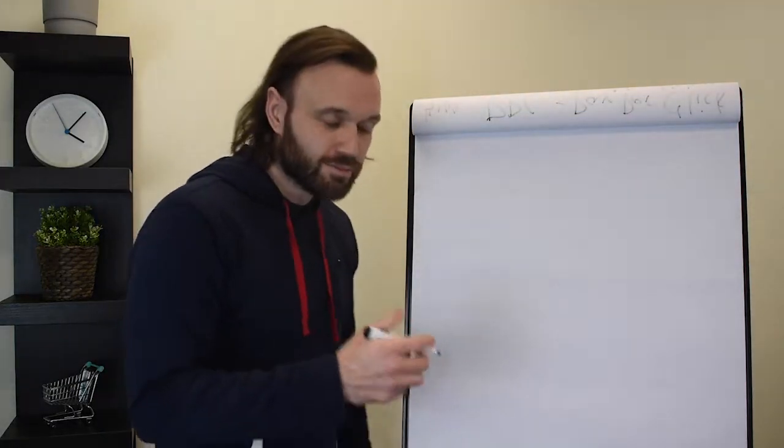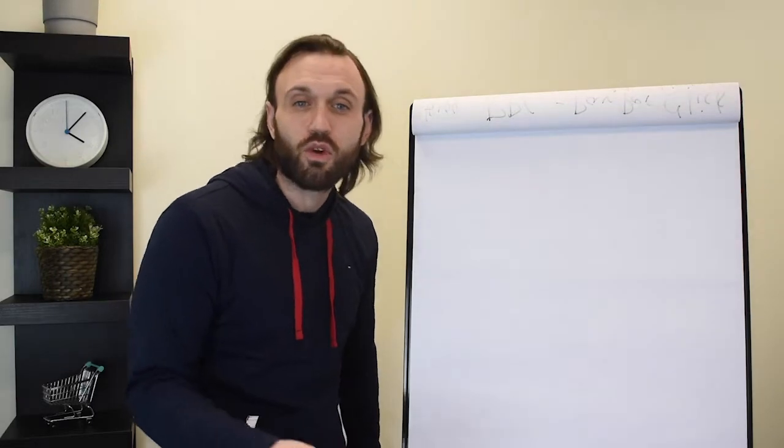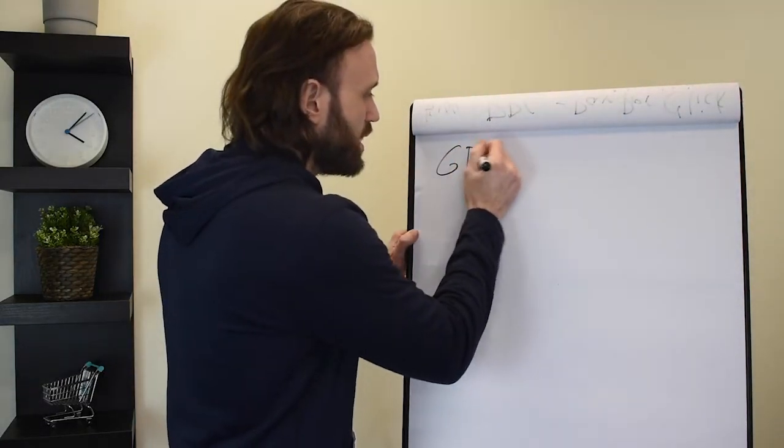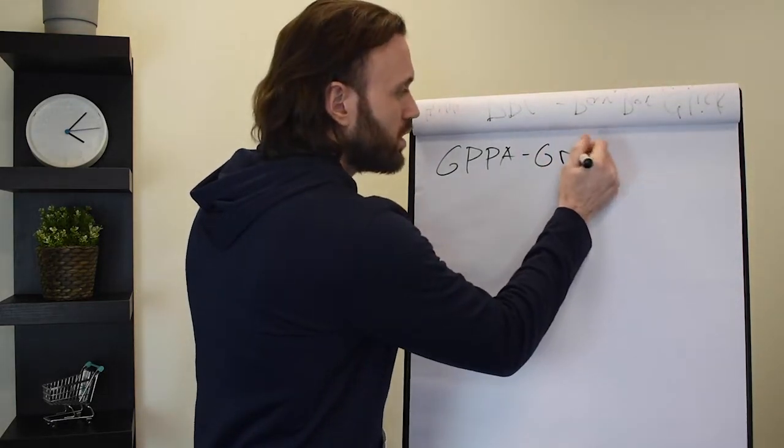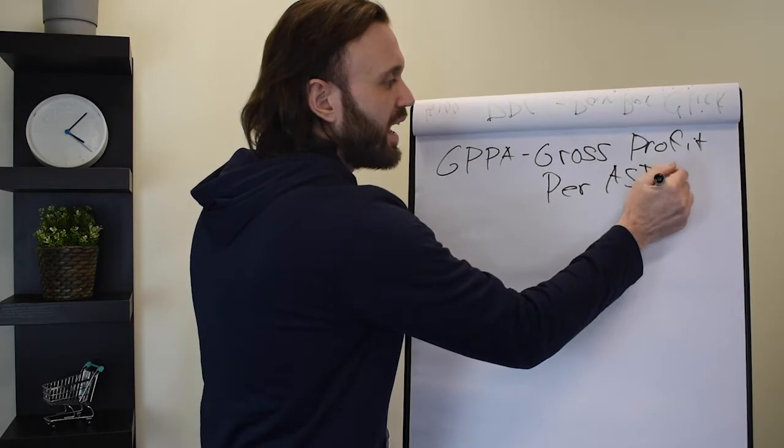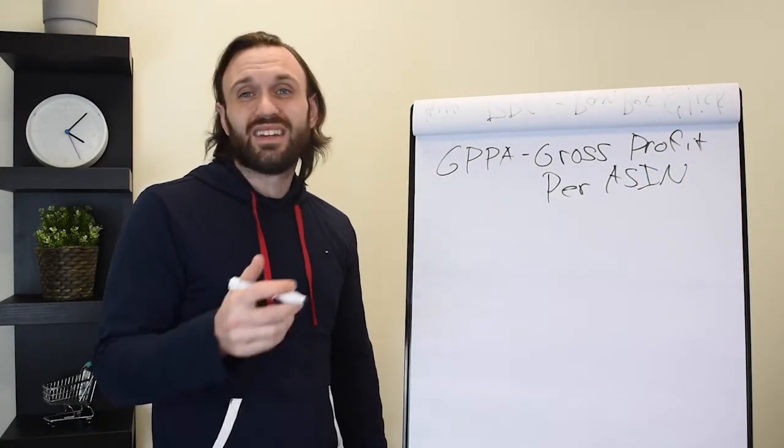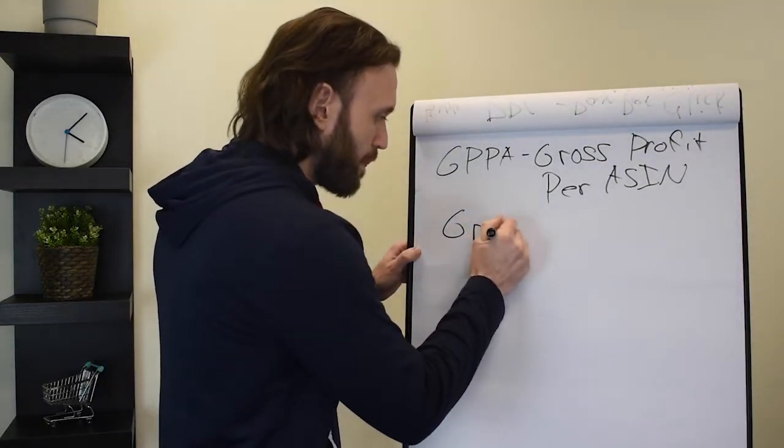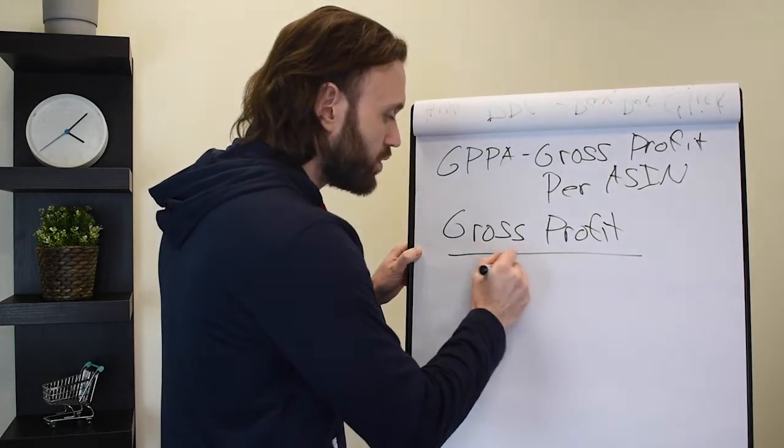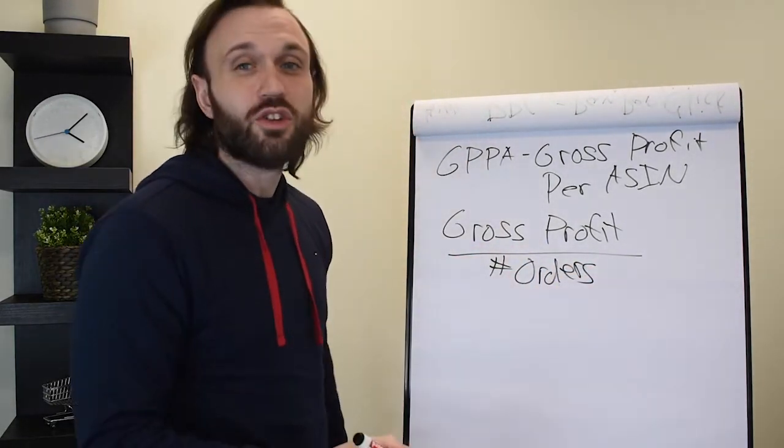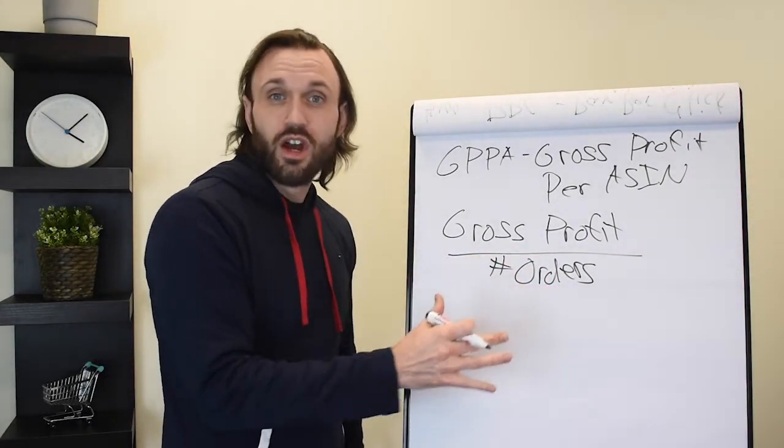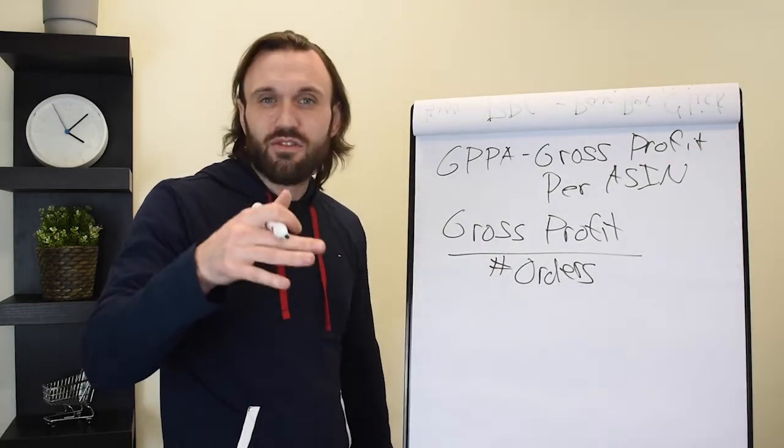So the first thing you're going to want to know for your company is obviously margins. And when I'm talking about margins, I'm talking about gross margins and profit margins. The first number we're going to analyze, we call it your GPPA. GPPA, and what that is, it's your gross profit per ASIN. And it's very simple to get your gross profit per ASIN. You take your gross profits and you divide them by the number of orders you sold. And the best way to do these metrics is on a monthly basis, really a 30 day basis.